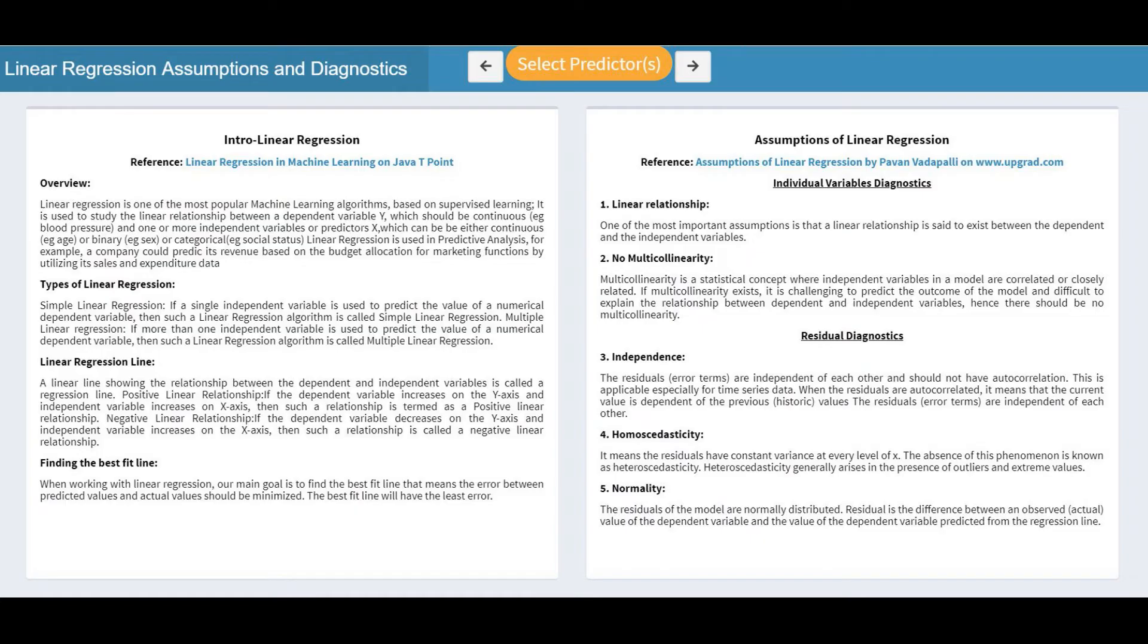Linear regression is one of the most popular machine learning algorithms based on supervised learning. It is used to study the linear relationship between a dependent variable and one or more independent variables. Those five major assumptions are linearity, no multicollinearity, independence, homoscedasticity, and normality.